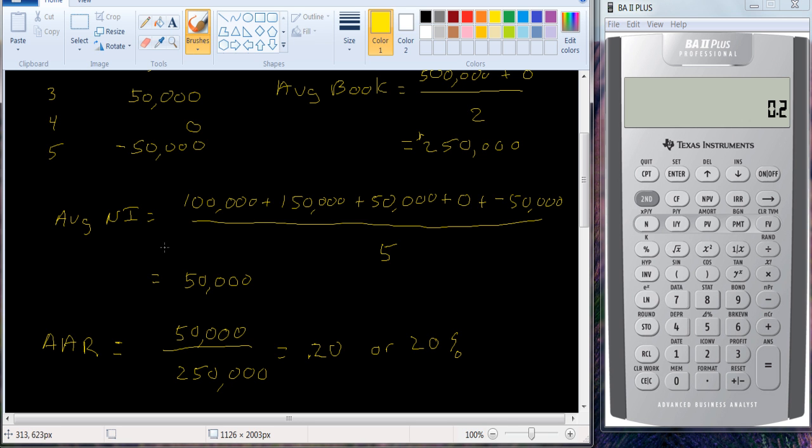It doesn't account for things like cannibalization, synergy effects, et cetera. It doesn't adjust for risk. We see no way that we've adjusted for risk. These numbers come from wherever they come from. You could rank projects from it, so that's a positive. And it has no bearing on how much value it adds to the firm.